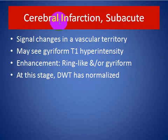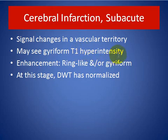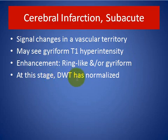Cerebral infarction: signal character changes in a vascular territory are characteristic. May see gyral T1 high-signal intensity enhancement in a ring-like or gyral pattern at this stage. Diffusion-weighted images will have normalized.